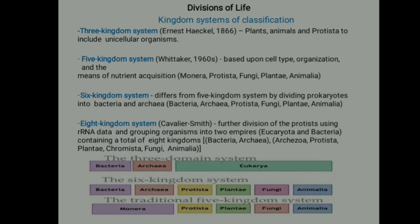The Six Kingdom system differs from the Five Kingdom system by dividing Prokaryotes into Bacteria and Archaea, giving six kingdoms: Bacteria, Archaea, Protista, Fungi, Plantae, and Animalia.